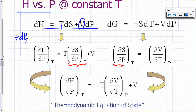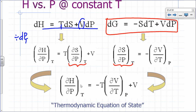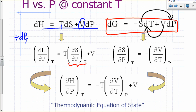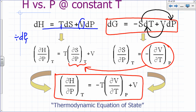We don't want the derivative of S with respect to P in the expression — we want things just in terms of pressure, temperature, and volume. So we use a Maxwell relation. From the Gibbs energy representation, partial of S with respect to P at constant T equals negative partial of V with respect to T at constant P. Substituting that in gives us the thermodynamic equation of state for H.